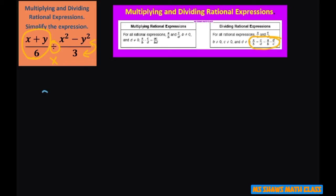So we're going to write x plus y divided by 6, change it to multiply, and flip this 3 divided by... Now we're going to factor this. This is the difference of squares, so this is going to be